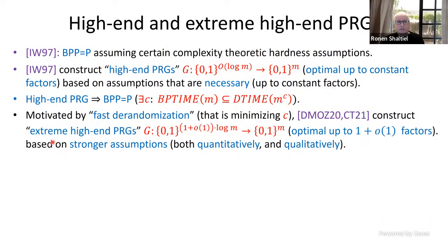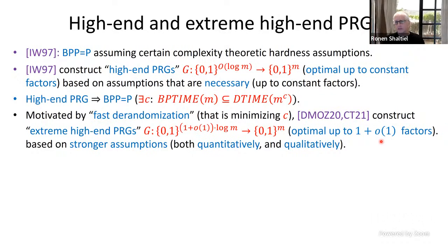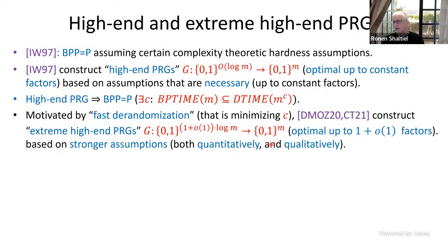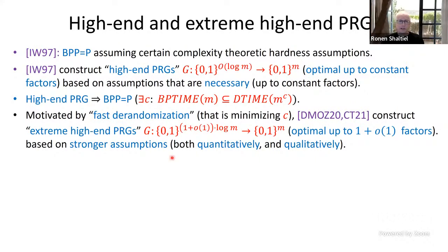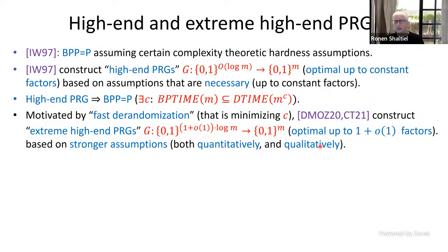Extreme high-end pseudo-random generators are not only optimal up to constant factors, but they optimize their constants. They are optimal up to (1 + o(1)) factors — they stretch (1 + o(1)) log M random bits into M pseudo-random bits. These two works constructed these extreme high-end pseudo-random generators based on stronger assumptions, where the assumptions are stronger both quantitatively and qualitatively.